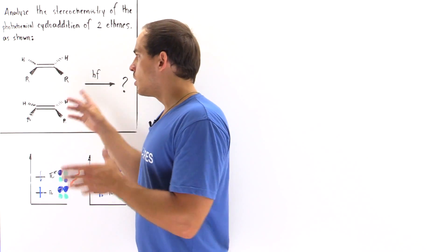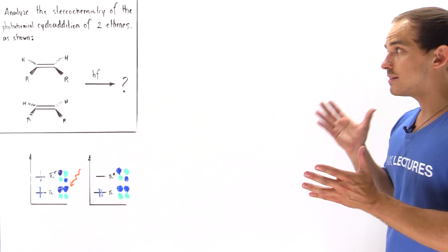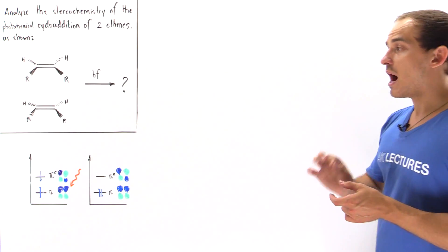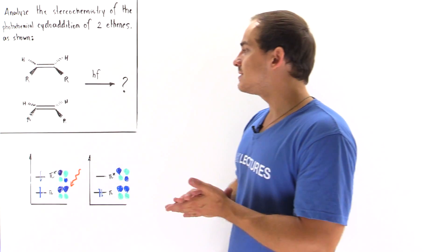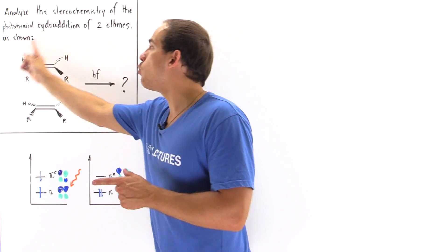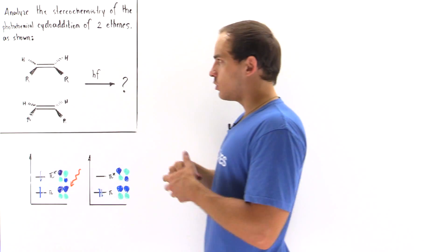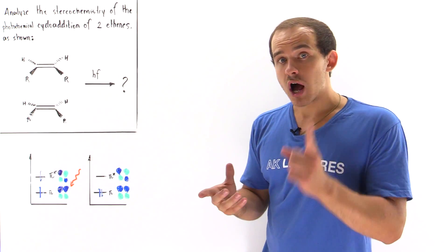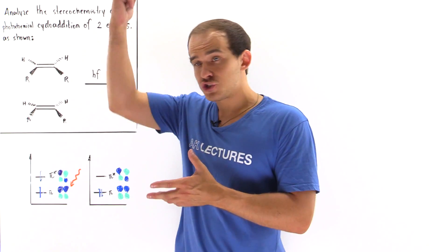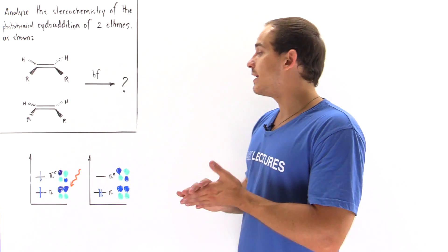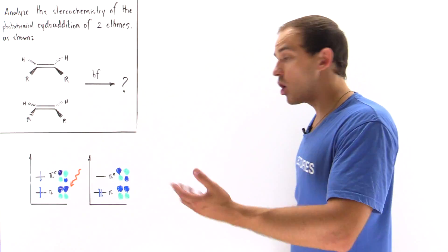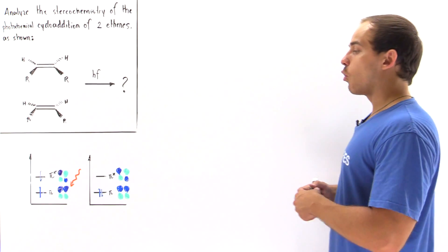Both molecules are exactly the same, so they contain the same number of pi electrons and the same number of pi molecular orbitals — the pi bonding and pi antibonding molecular orbitals. When we shine light onto one of the molecules, an electron in the pi bonding molecular orbital gains enough energy and transitions up to the pi star (pi antibonding) molecular orbital. This becomes our HOMO, and the original pi bonding orbital becomes our LUMO.